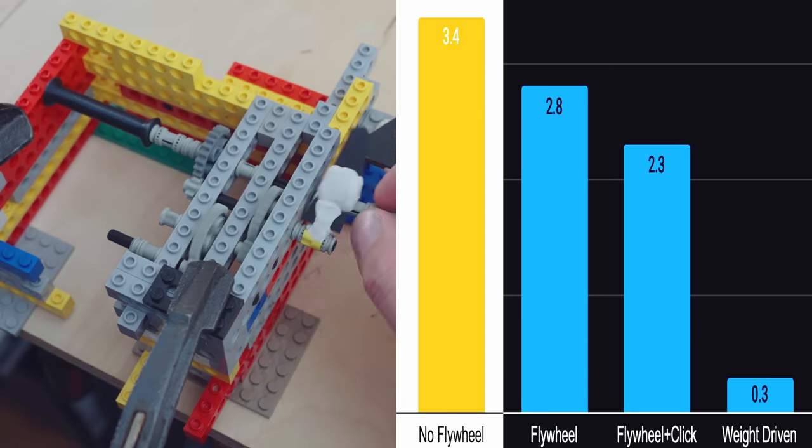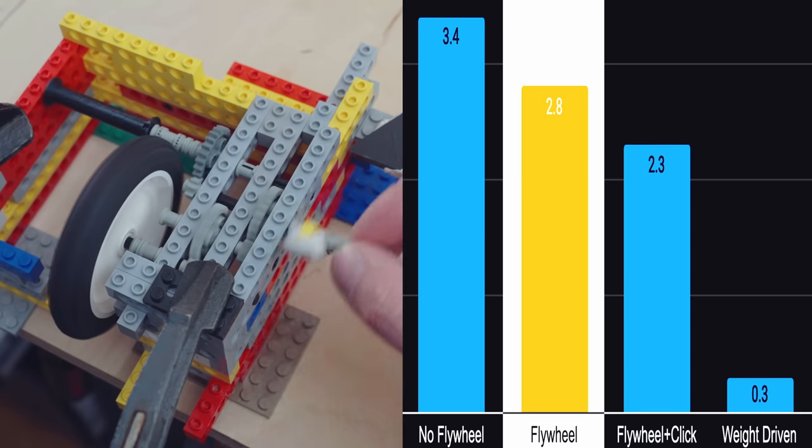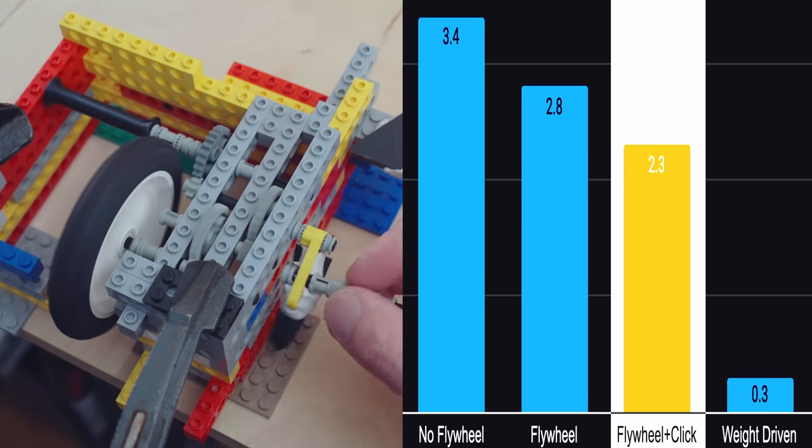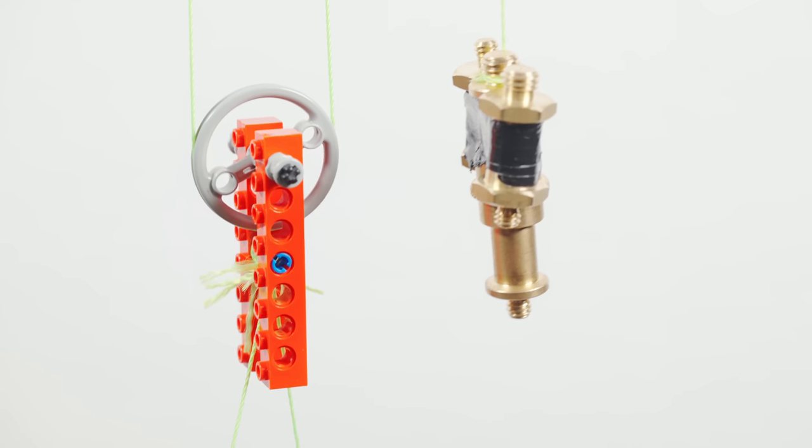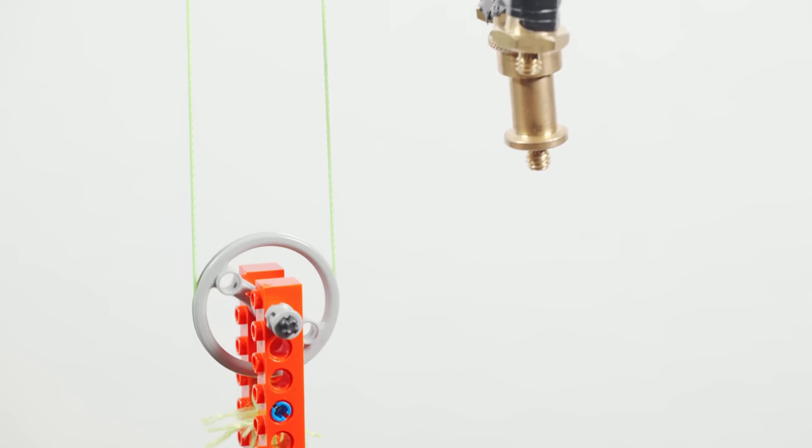And admittedly in this LEGO experiment I used a LEGO flywheel, so probably a real flywheel will play much tighter. But in either case a weight drive seems to be a really interesting option for making a tight marble machine 3.